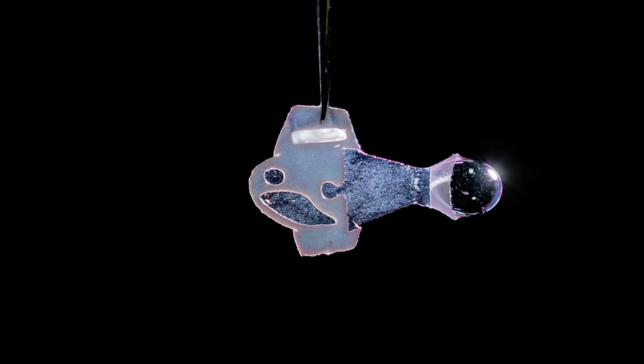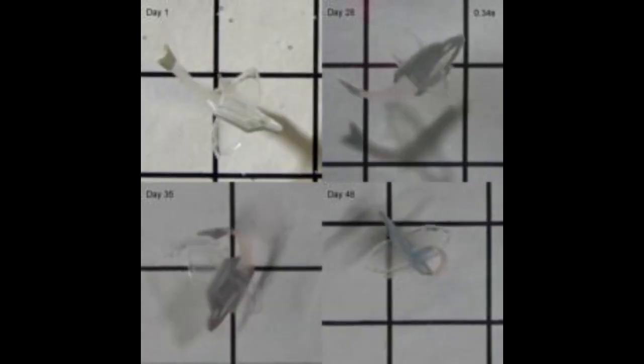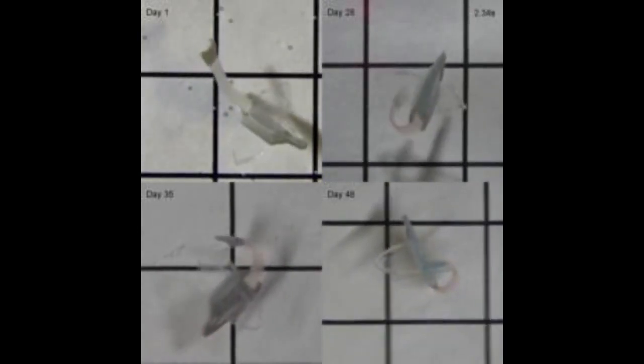Unlike previous devices, the bio-hybrid zebrafish has two layers of muscle cells, one on each side of the tail fin. When one side contracts, the other stretches.